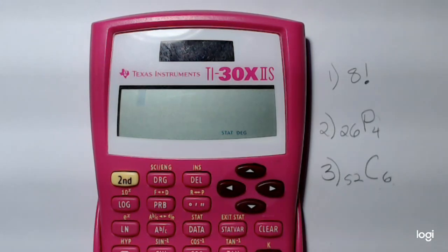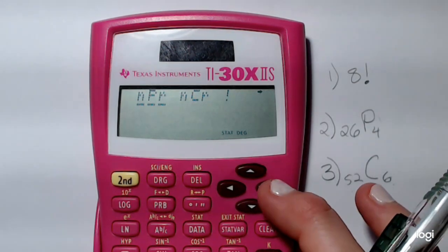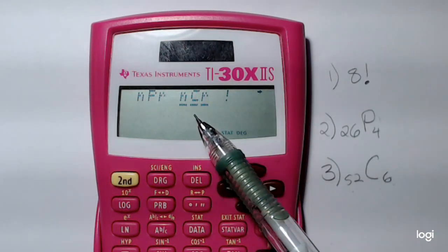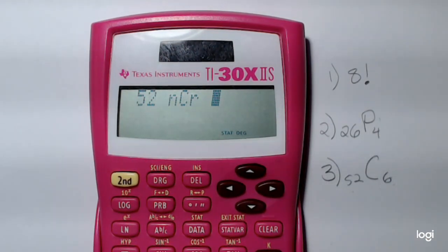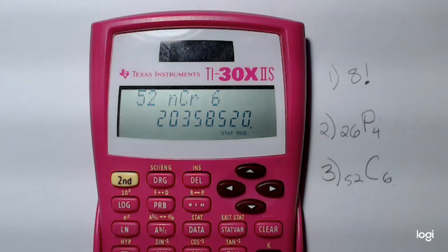So again, I want to put in N first, which is 52. Select my probability button. Right arrow over to N choose R. Press enter, and then we need to put in R. I'm choosing 6 objects, and then enter again. And you get a really big number: 20,358,520.